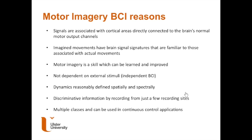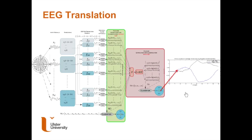Motor imagery BCIs are associated with cortical areas directly connected to the brain's normal output channels. Motor imagery is a skill that can be learned and improved, and it's not dependent on external stimuli, making it an independent BCI. The dynamics are reasonably well defined spatially and spectrally, and motor imagery can produce a continuous control signal as opposed to a discrete one.